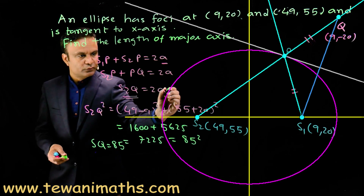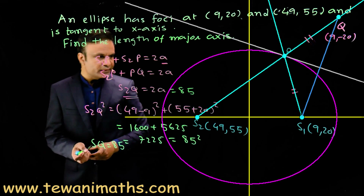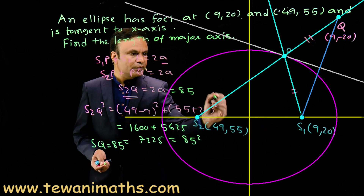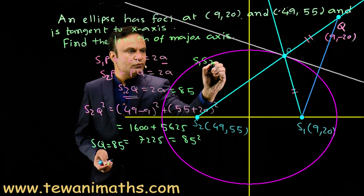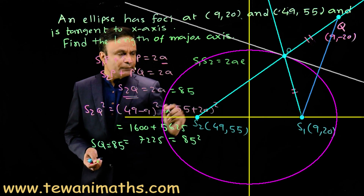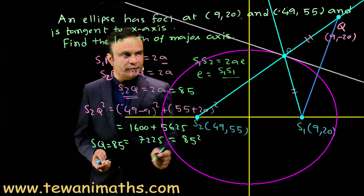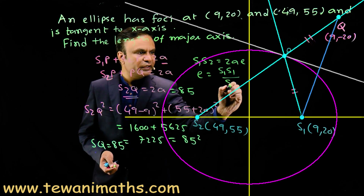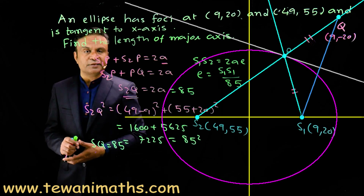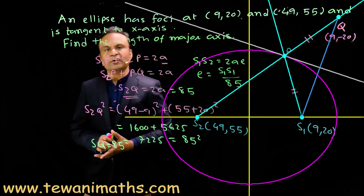So S2Q = 85, which equals the length of the major axis. We can also get the eccentricity of the ellipse by computing the distance S1S2 = 2ae. Since 2a = 85, this is a very interesting problem based on the reflection property of the ellipse.